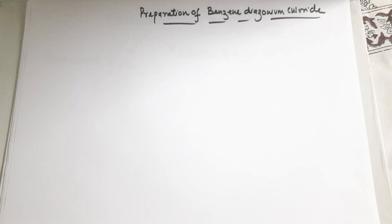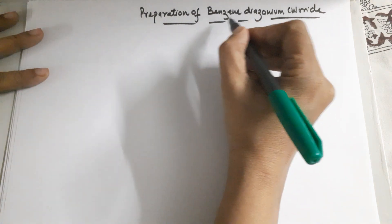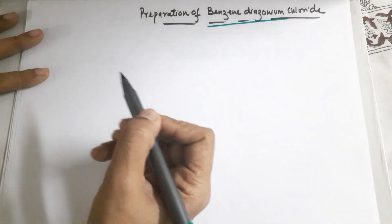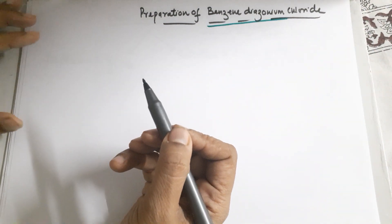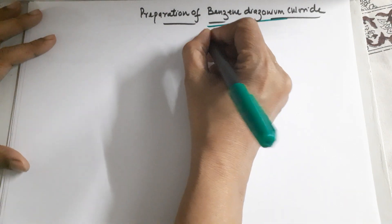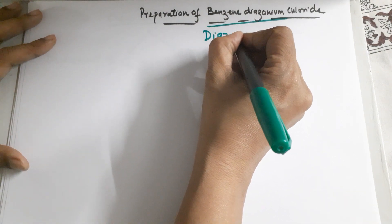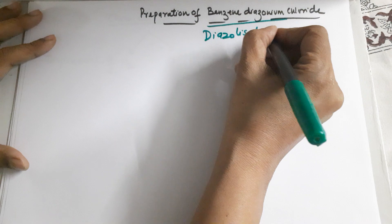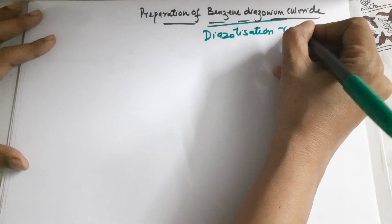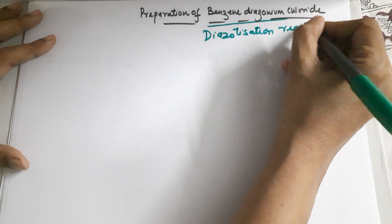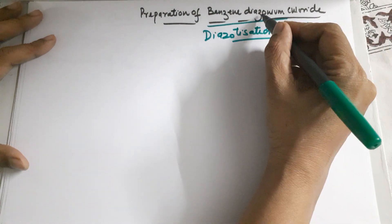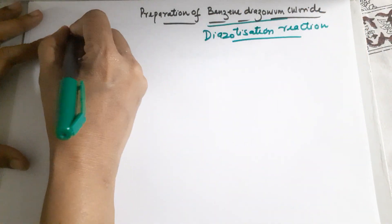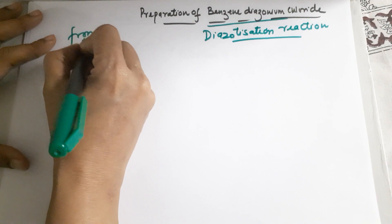Okay, in today's class we'll be talking about the preparation of benzene diazonium chloride. This preparation is also called a diazotization reaction. Diazotization reaction is the name of a reaction in which you prepare benzene diazonium chloride from aniline.